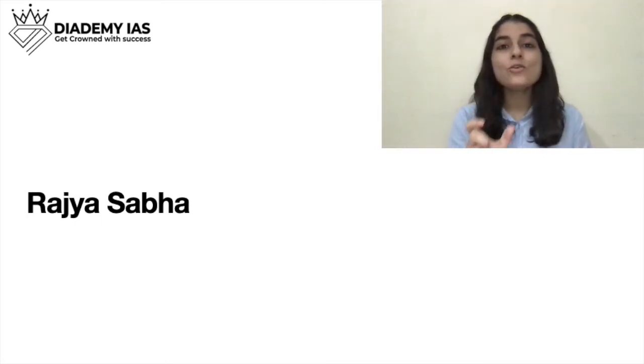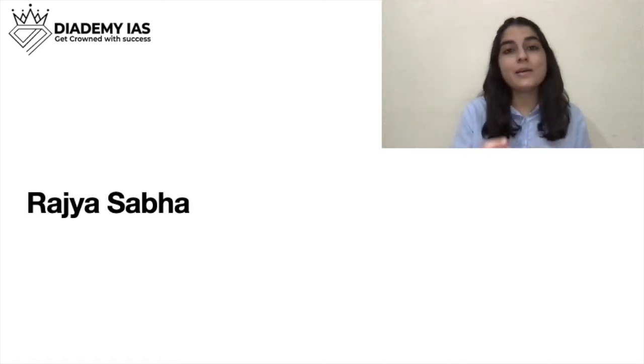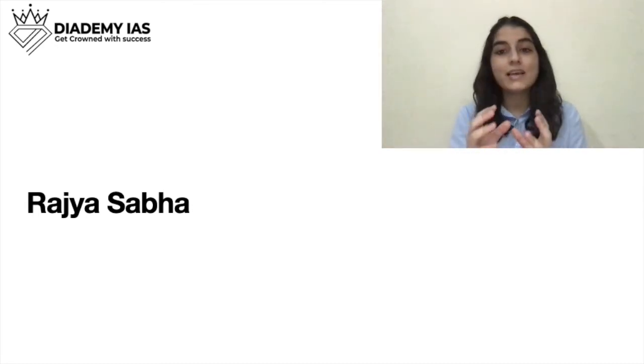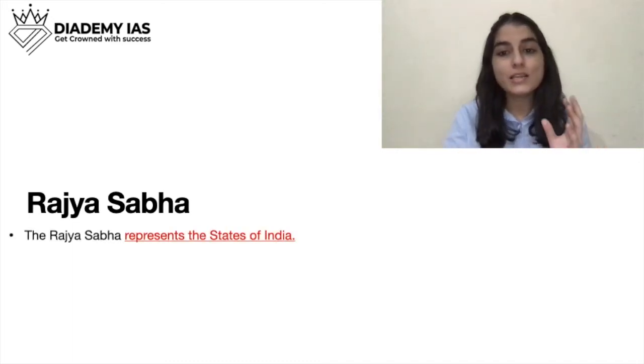First we will be covering Rajya Sabha. 'Rajya' means states, that is why Rajya Sabha is also called the Council of States. Rajya Sabha protects the interest of the states — all 29 states of our country. So basically at the central legislature, the states' interests are protected by the Council of States or Rajya Sabha. This house represents the states of India.